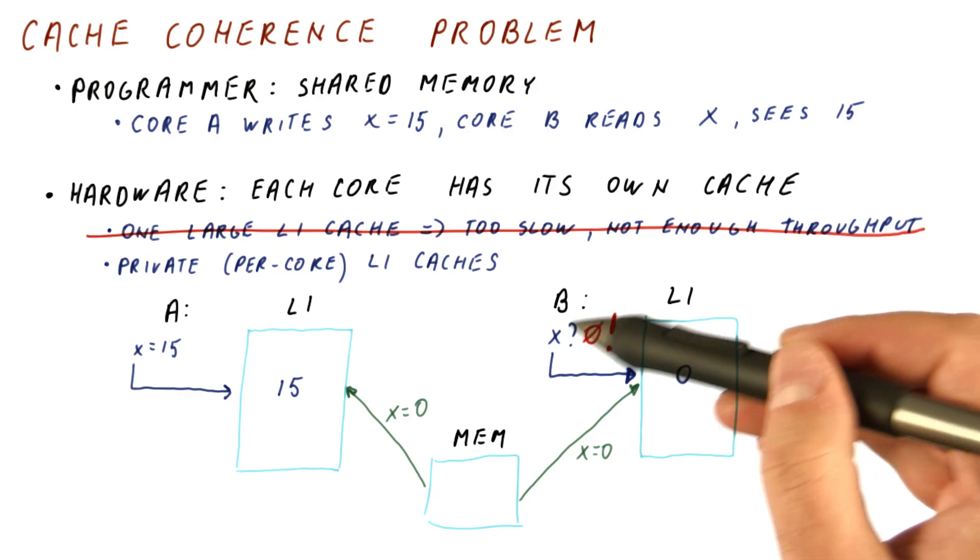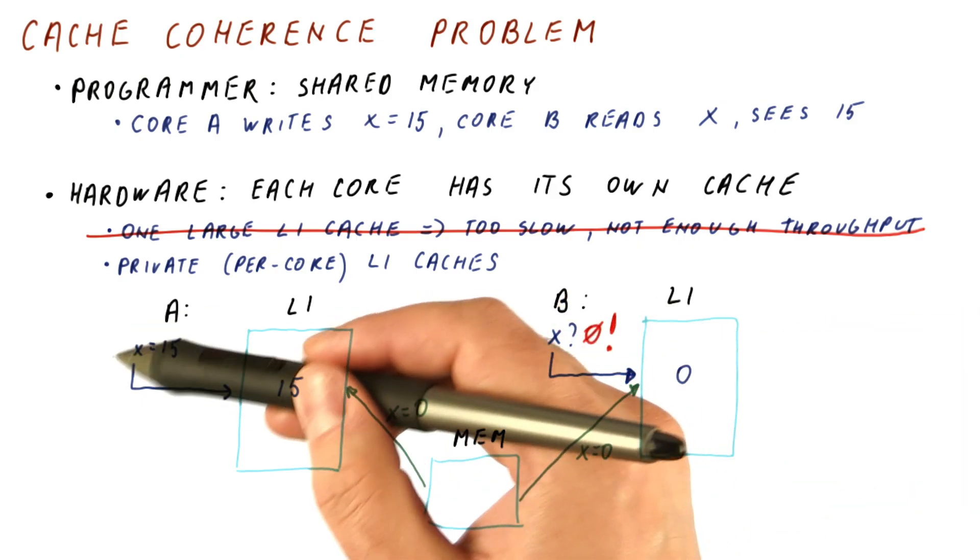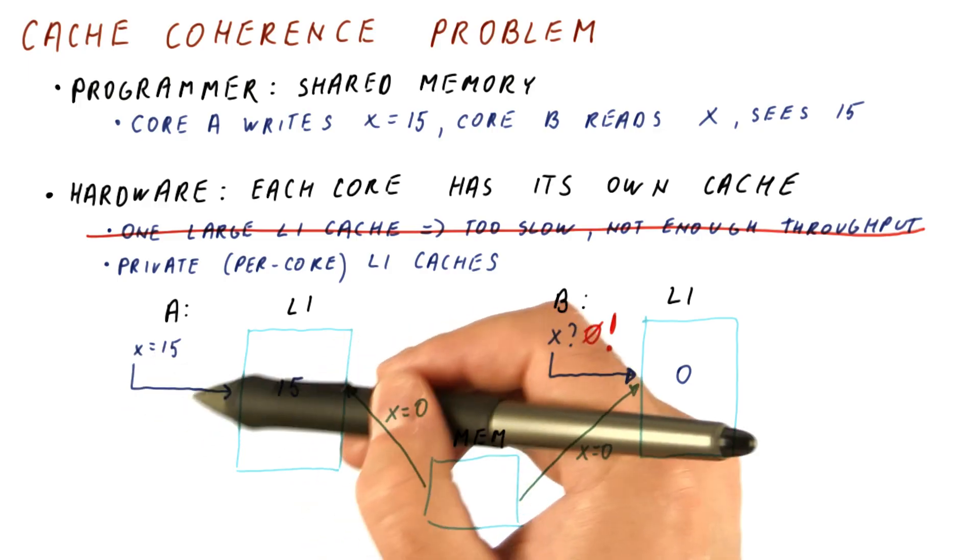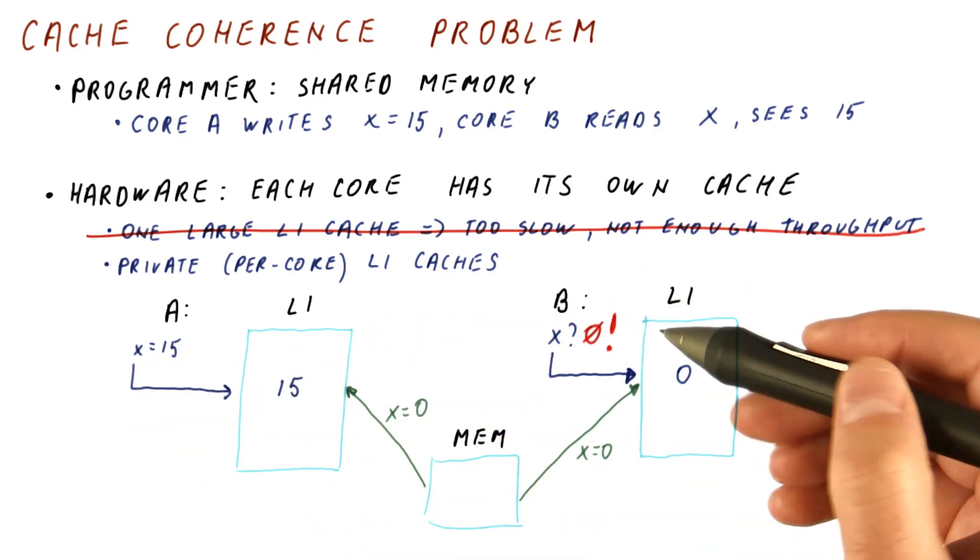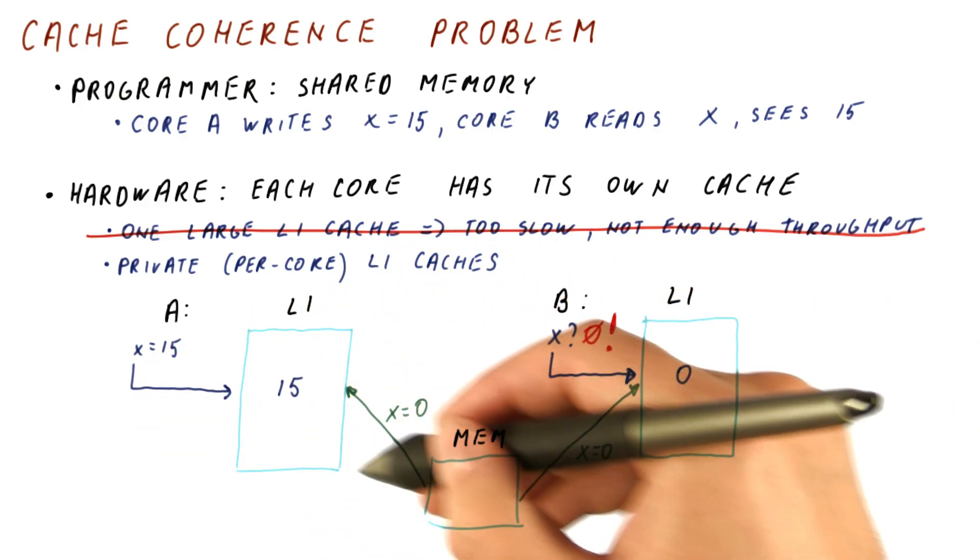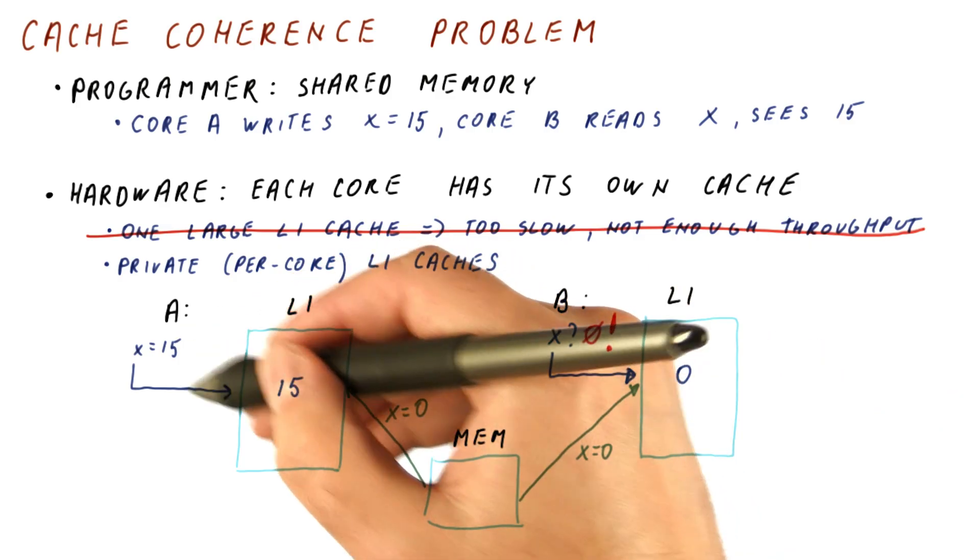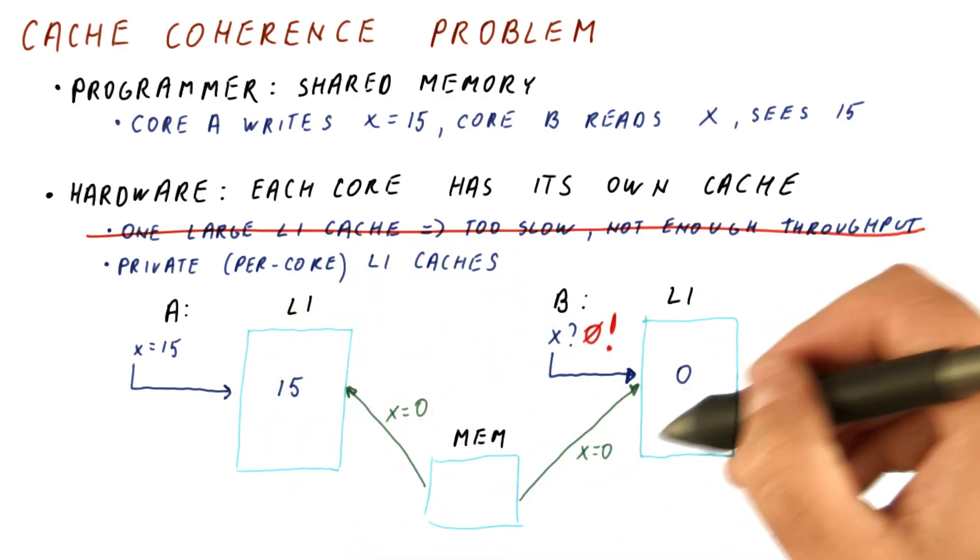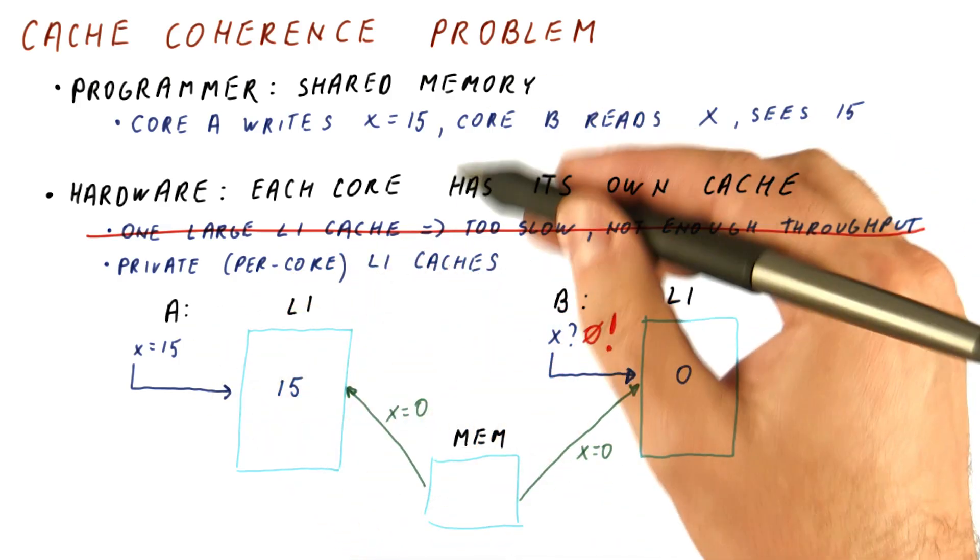B is never modifying it. It's always going to read 0, no matter how many times A writes 15 or something else here. So obviously, we are not getting the communication of data we want from A's writes to B's reads, and thus our shared memory doesn't work.